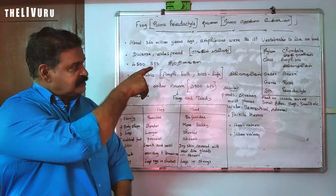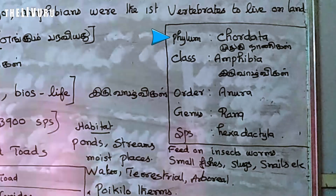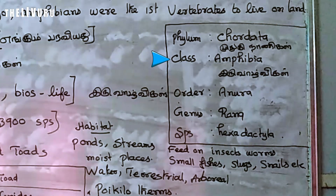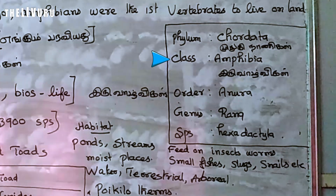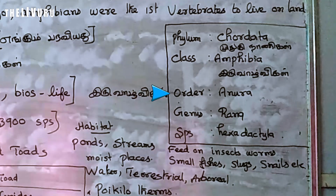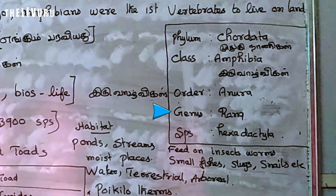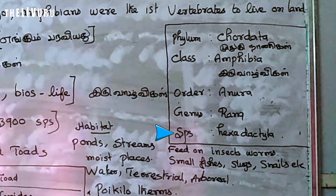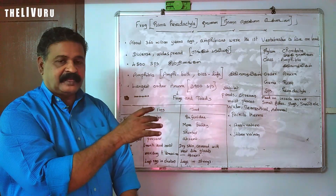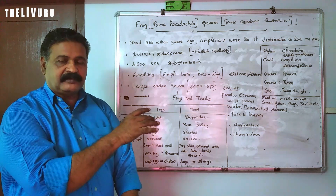Systematic position: Phylum — Chordata. Class — Amphibia. Order — Anura. Genus — Rana. Species — hexadactyla.